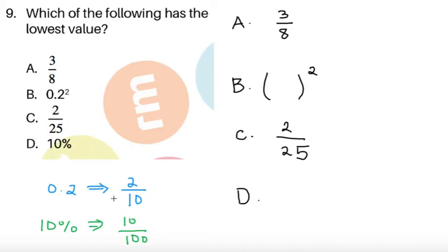Let's convert 0.2 to 2 over 10. We can put it in lowest term, it's going to be 1 fifth. And let's convert 10% to a fraction, so let's divide it by 100. And we simplify this to be 1 tenth.